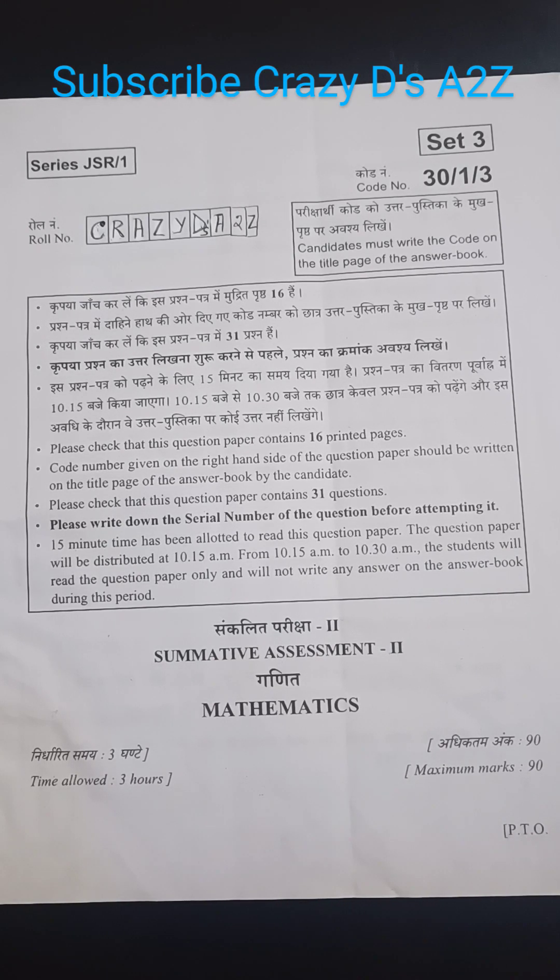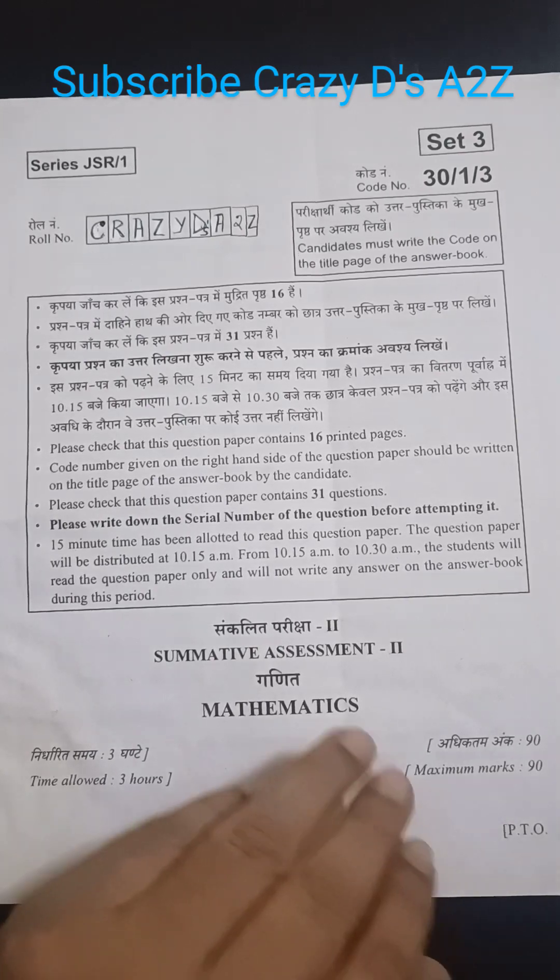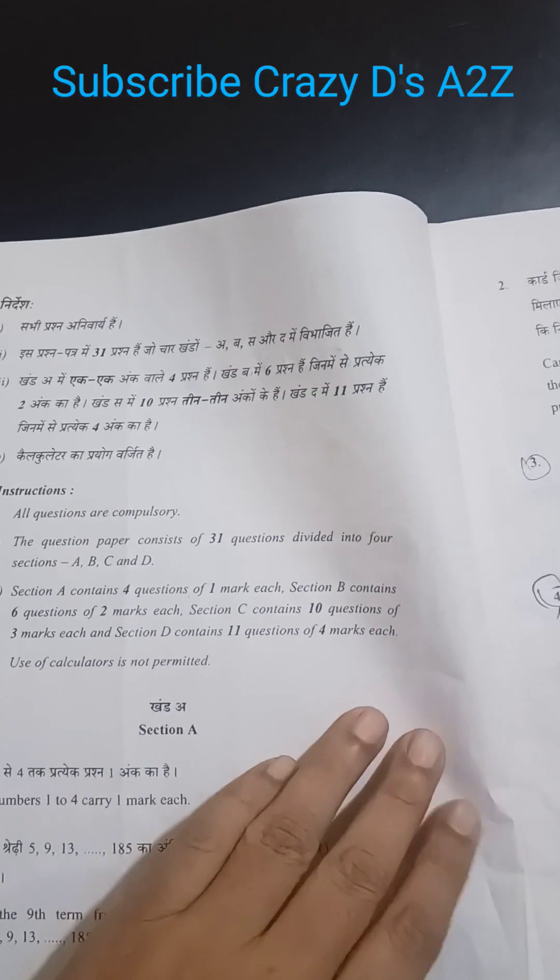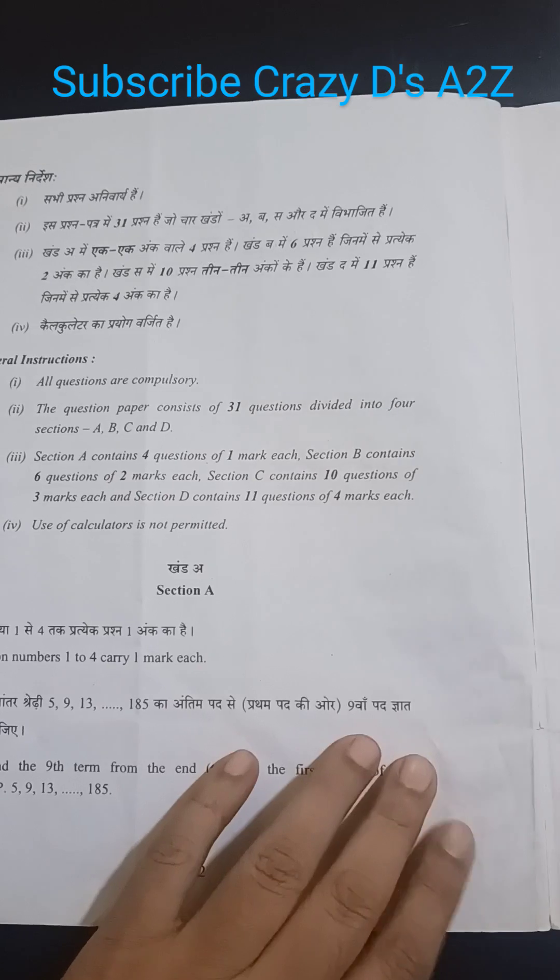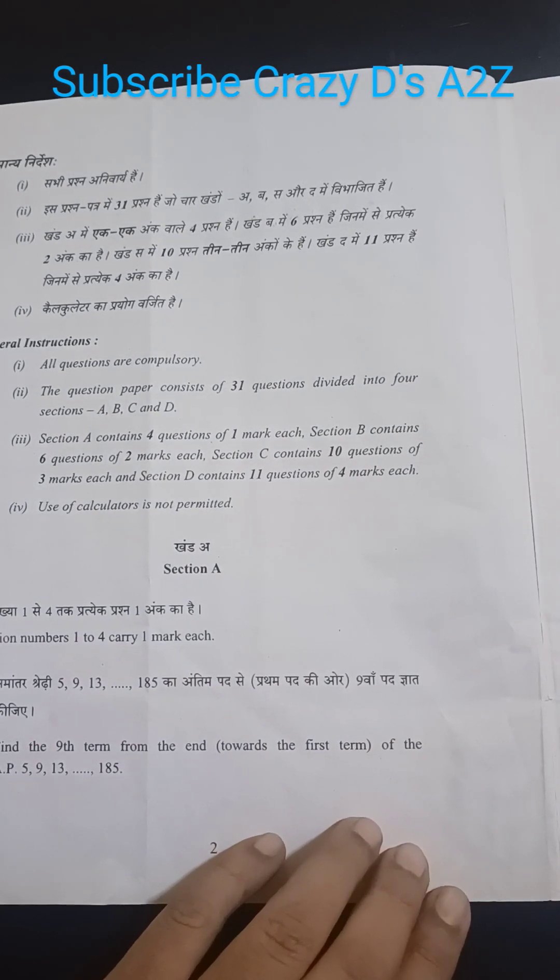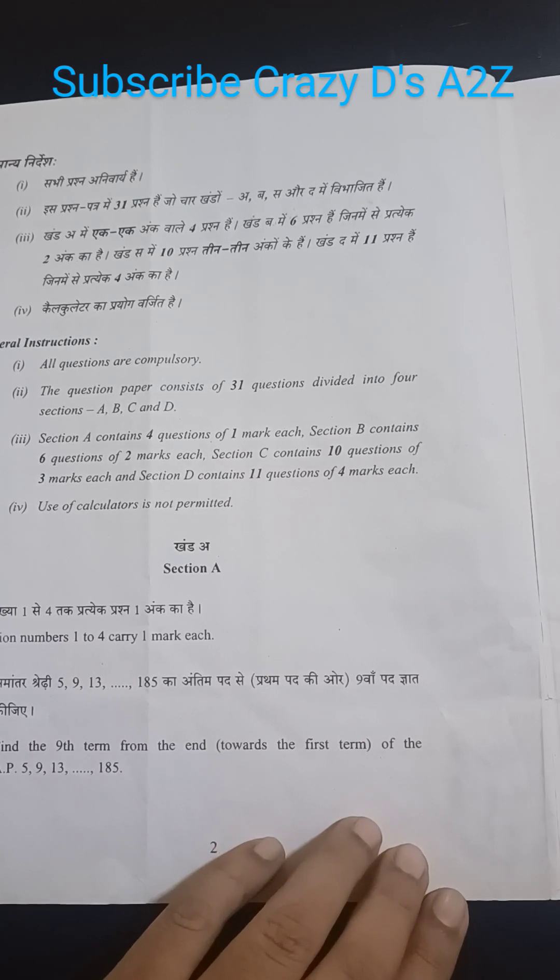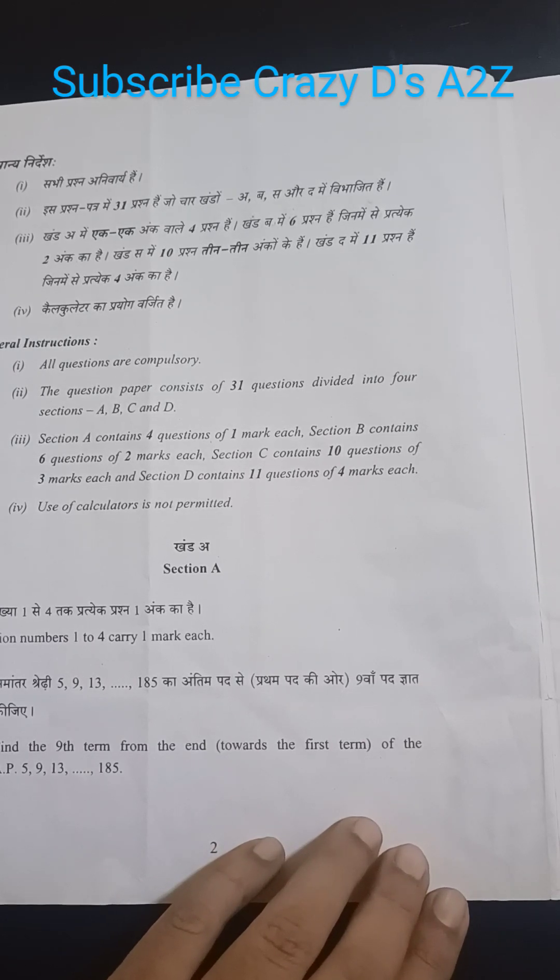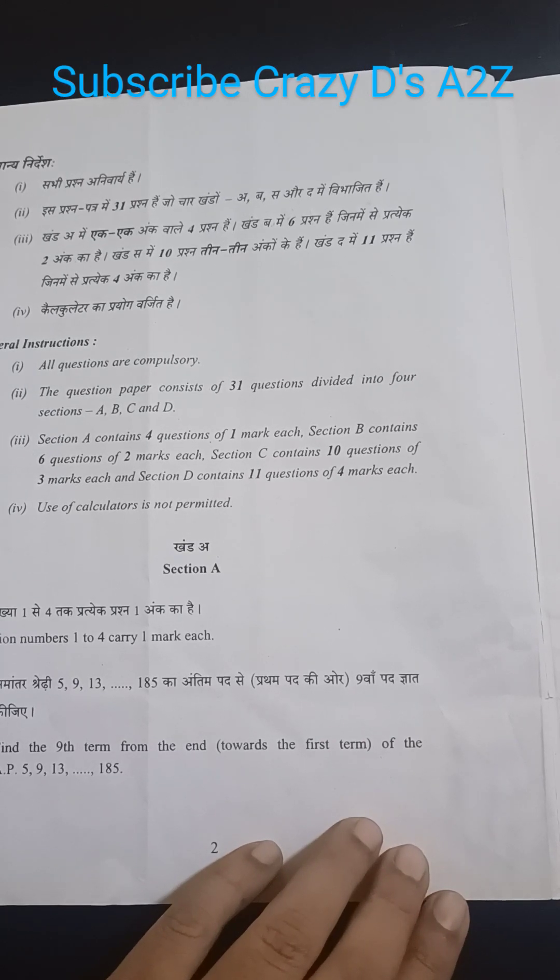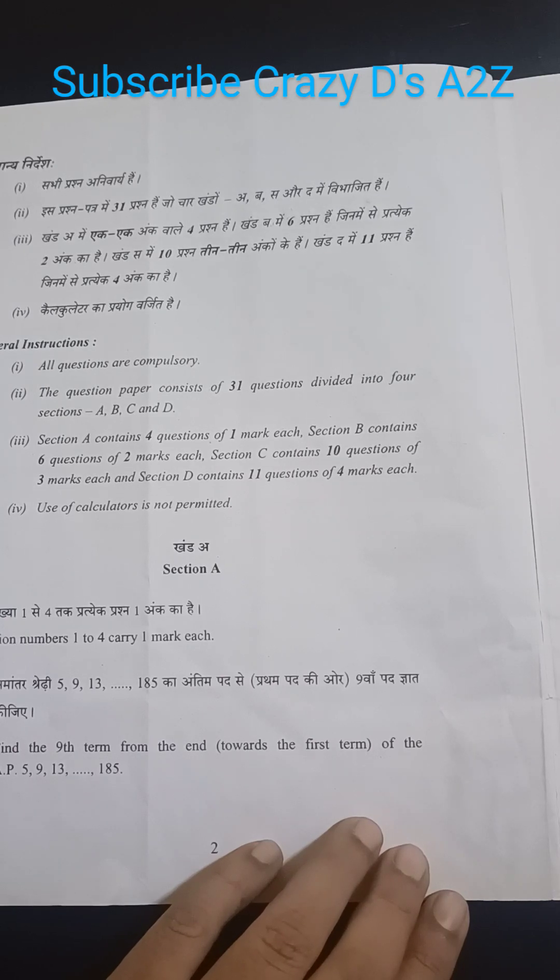Hopefully, I would say just go through those questions which are in your syllabus. This is the paper in which there are four sections and 31 questions. Section A comprises four questions of one mark each. Section B contains six questions of two marks each and Section C has 10 questions of three marks. Section D contains 11 questions of four marks each.